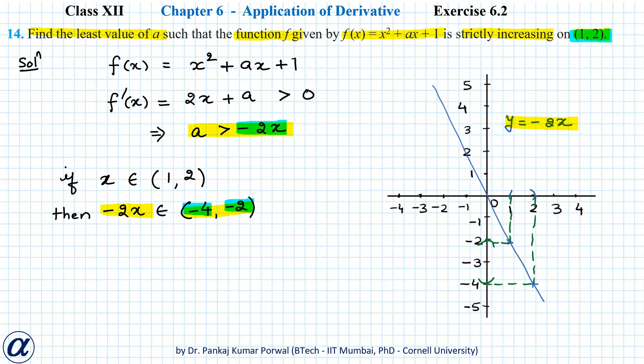Now -2x belongs to (-4, -2) and we want to find a which is greater than -2x. We can find such a value by plotting -2x on the number line. So here -2x lies in the open interval (-4, -2).